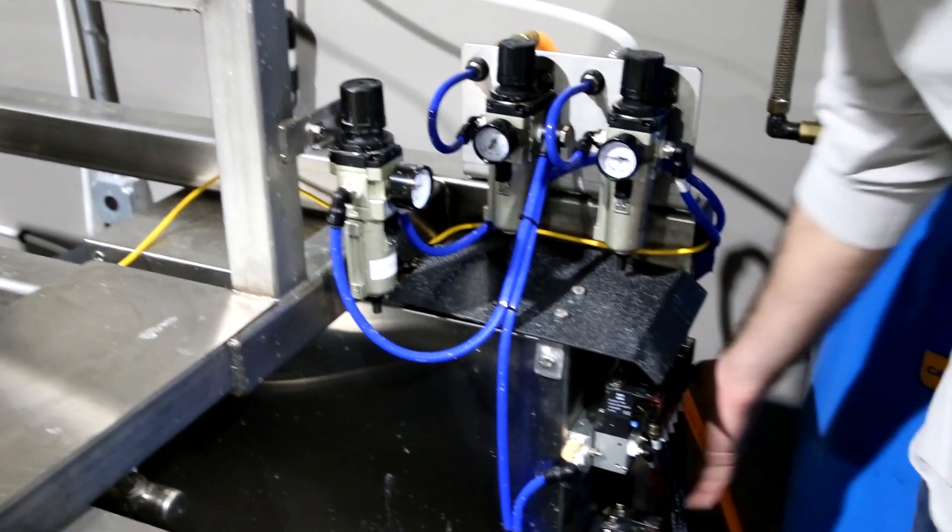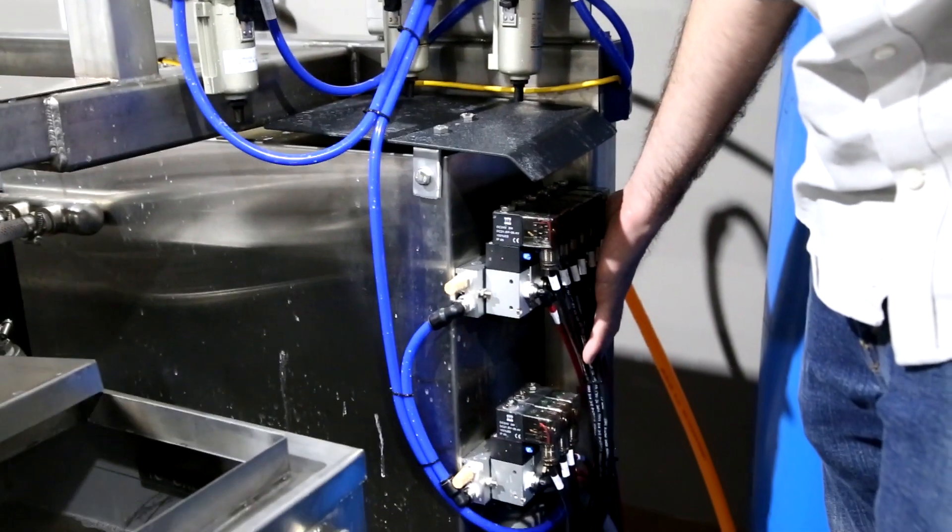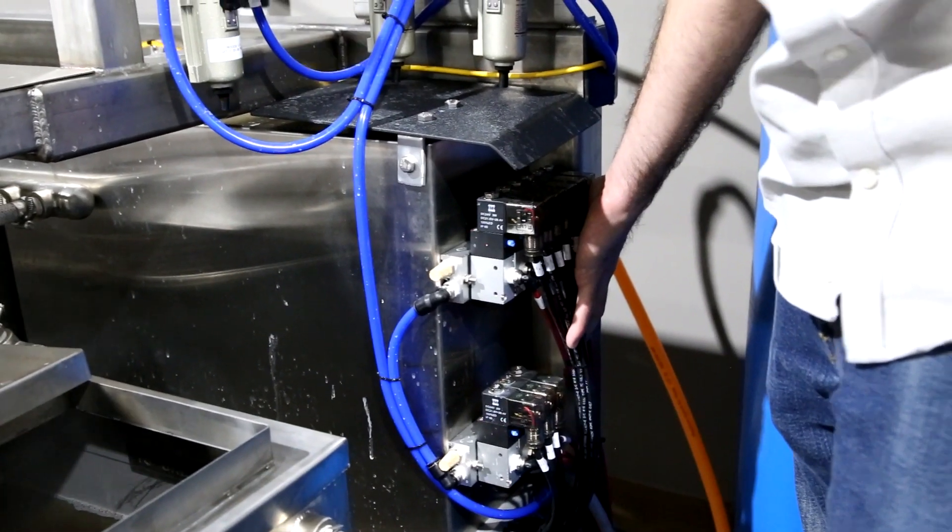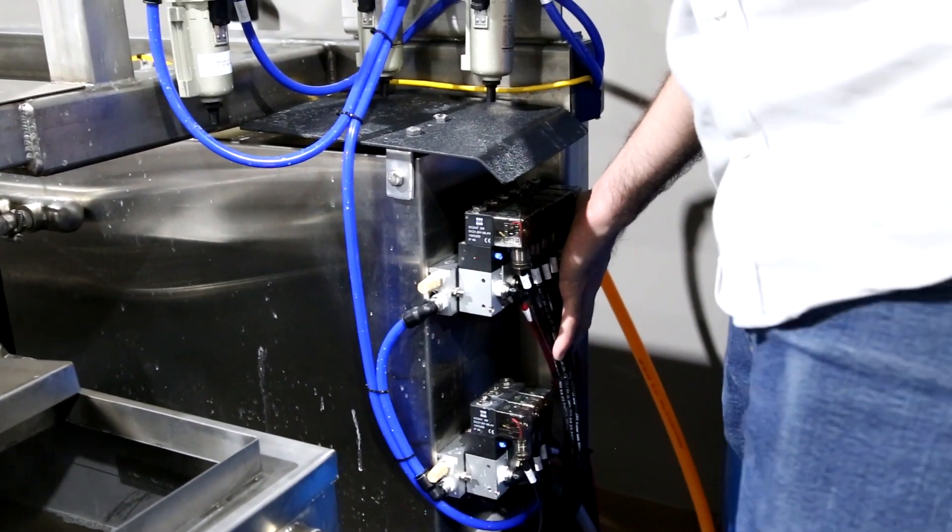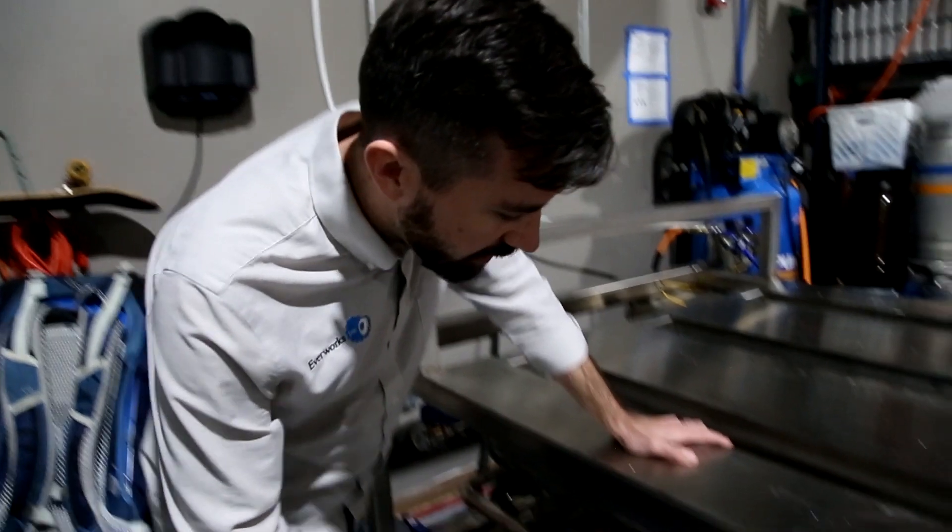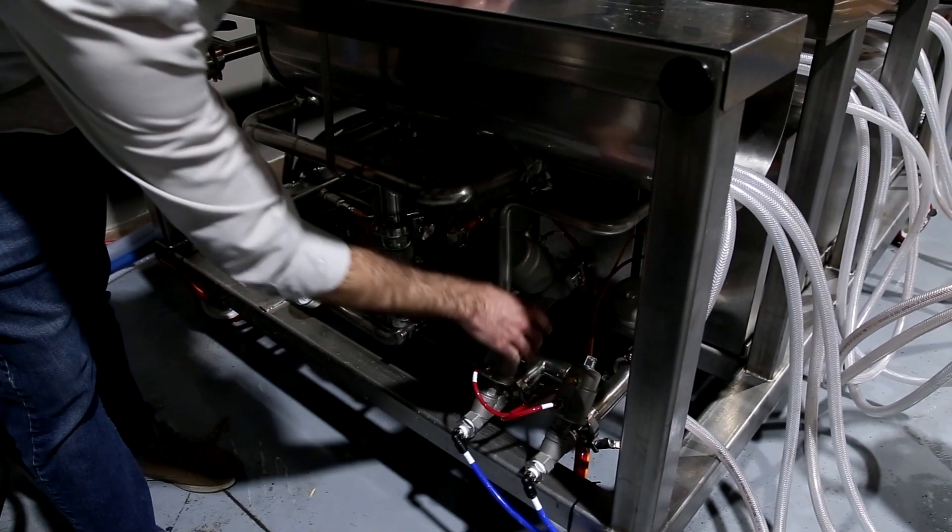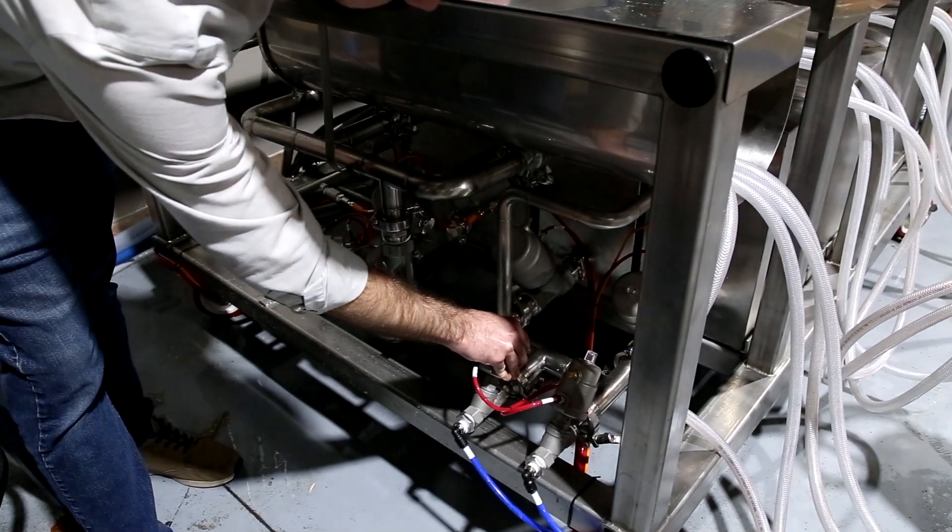Down below we have our solenoid bank manifold. All of these are 24 volt wash down rated and they control all of our angle seat pneumatic valves. On this side we have all of our custom fabricated stainless steel 304 tubing and all of our pneumatic angle seat valves.